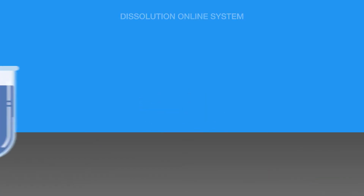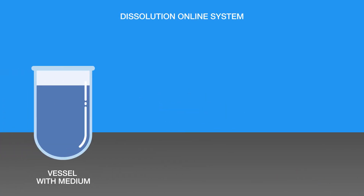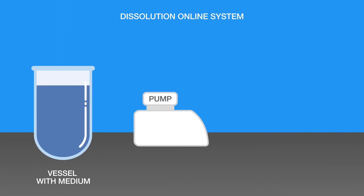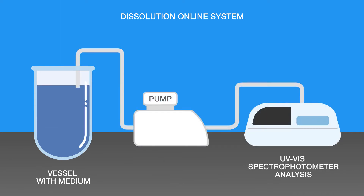Within the dissolution online system, the samples are directly transported from the vessel of the dissolution tester to the spectrophotometer. There is no offline gap in between — analysis runs automatically, online.